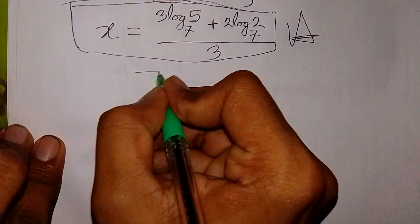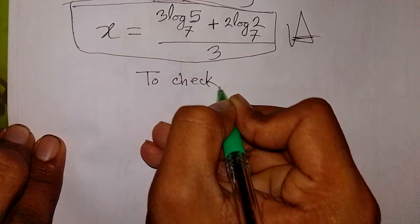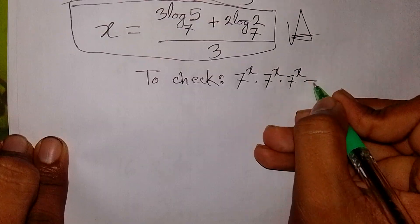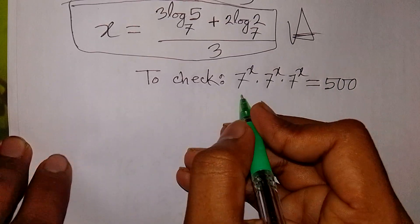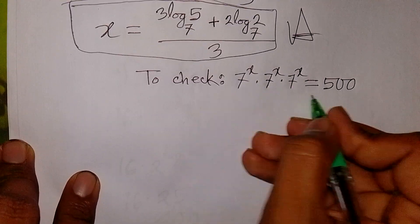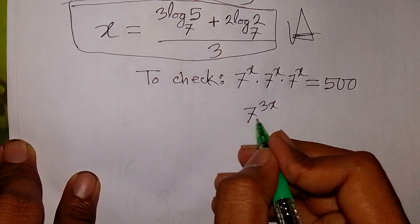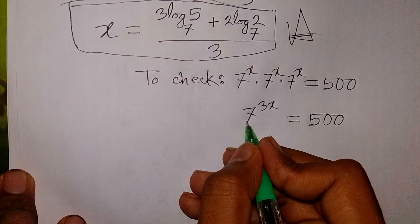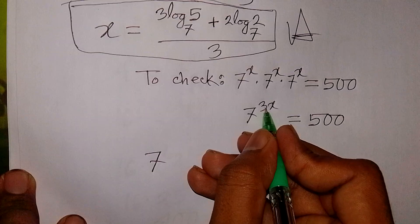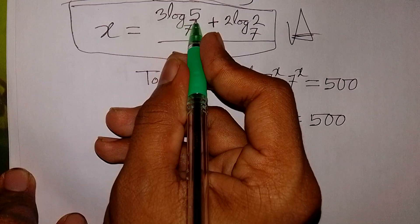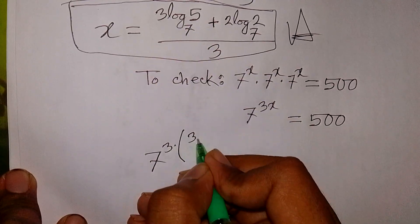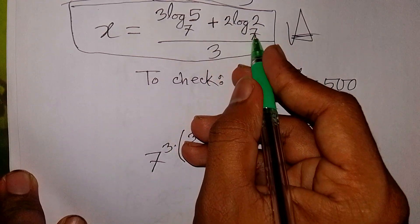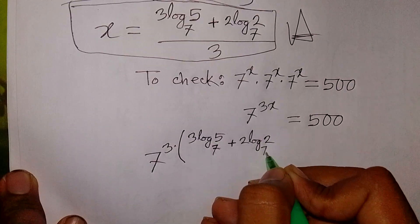Now to check: our equation 7^x times 7^x times 7^x equals 500. This times this times this is the same as 7 power 3x. That means we can verify by substituting 3x equal to 3·log 5 base 7 plus 2·log 2 base 7.